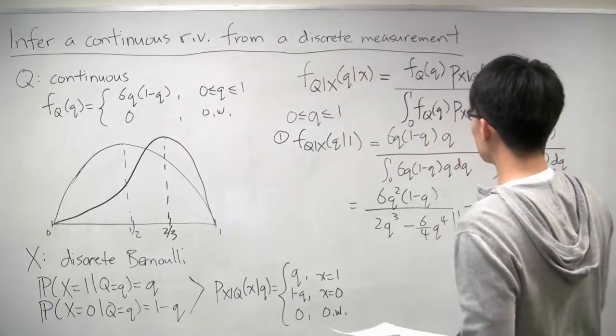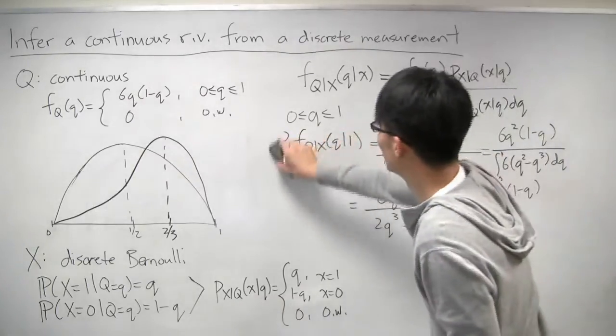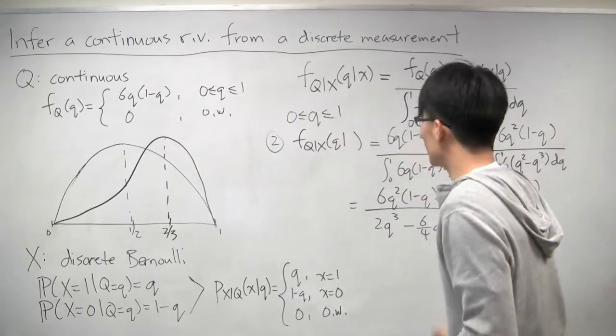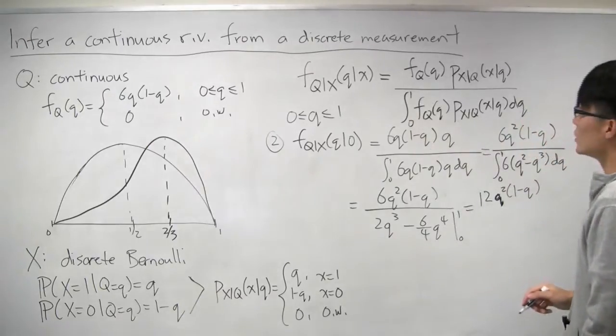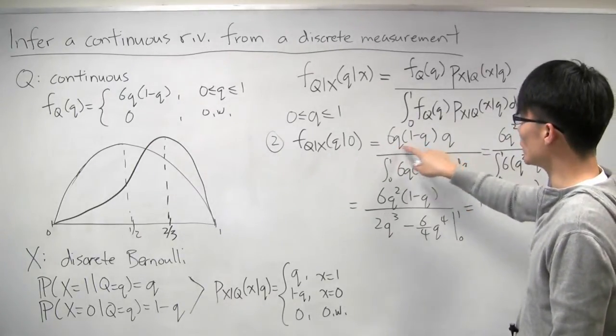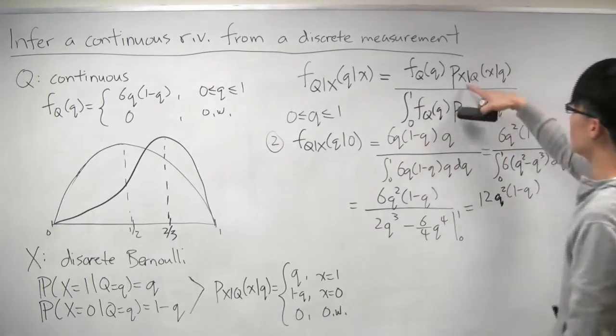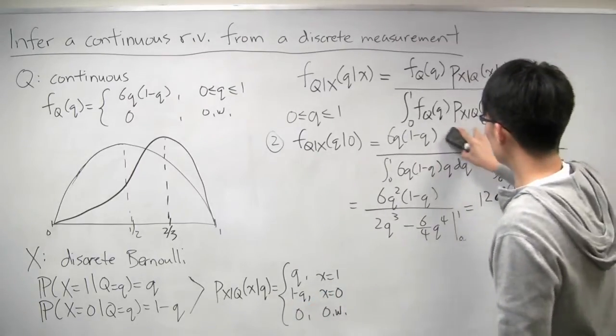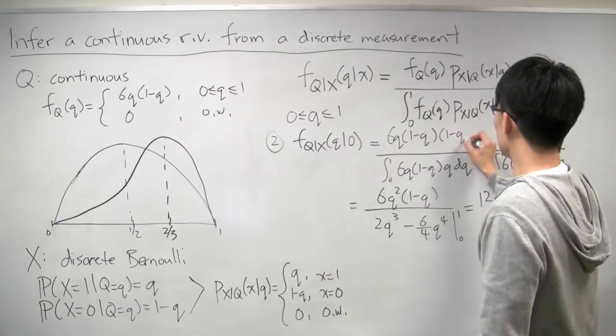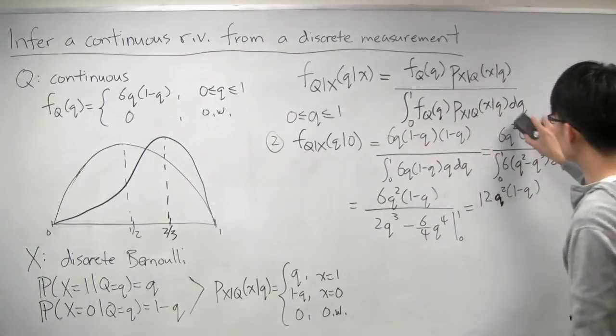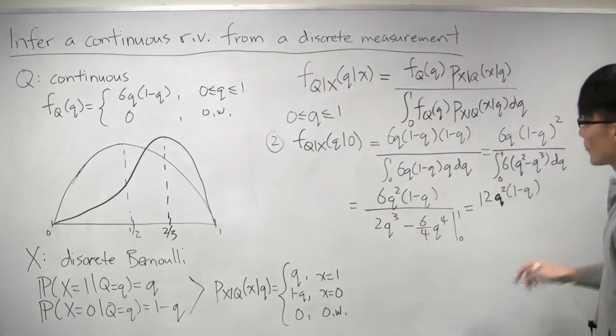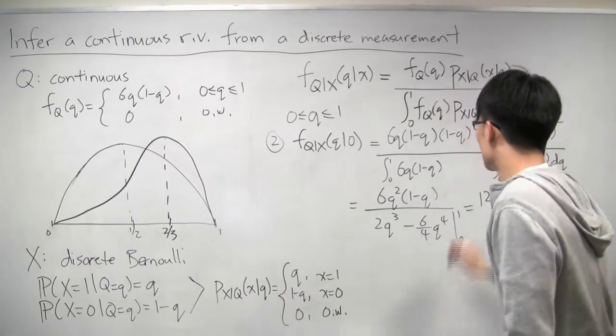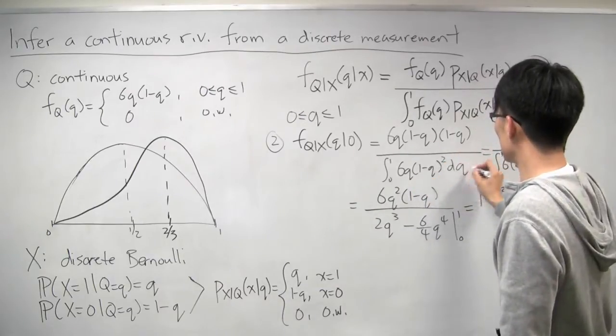And you can repeat this exercise now with the case where x is 0. So when x is 0, you still get the same term here, 6q 1 minus q. But the conditional PMF is now the conditional PMF when x equals 0, which is now 1 minus q. So you get 1 minus q here. And now this term becomes 6q times 1 minus q squared. And similarly, the bottom is also 6q times 1 minus q squared dq.